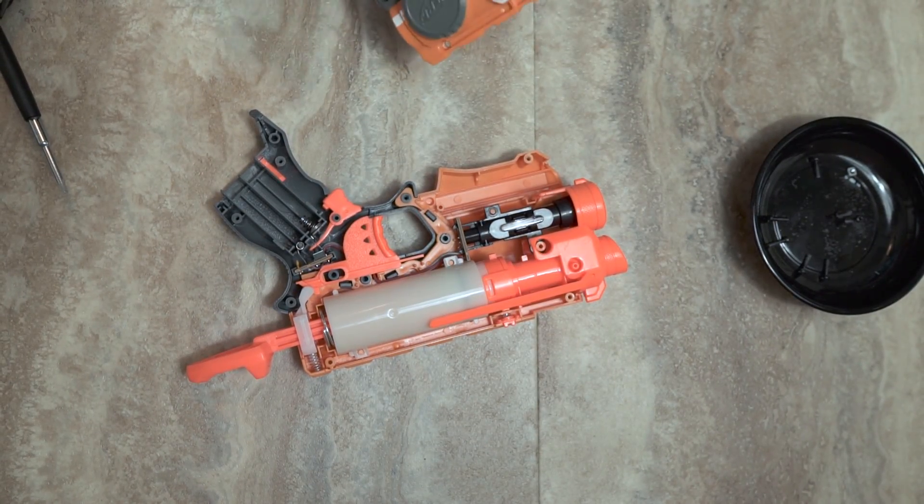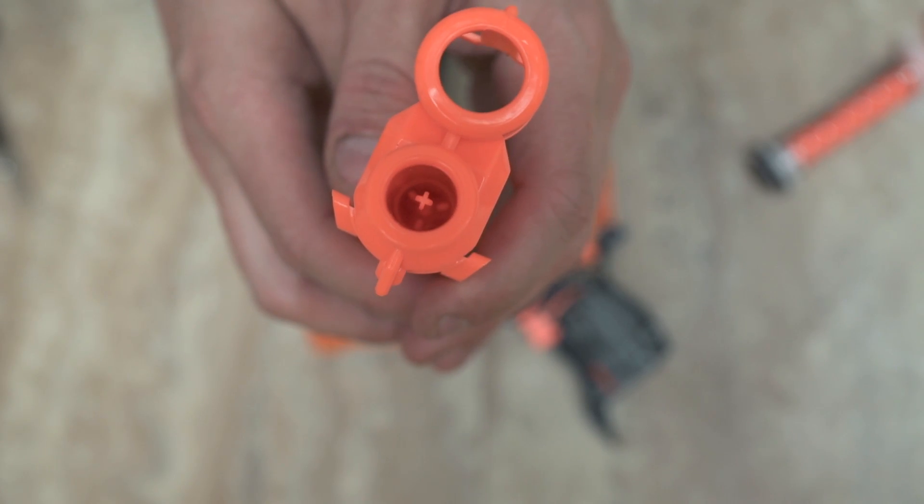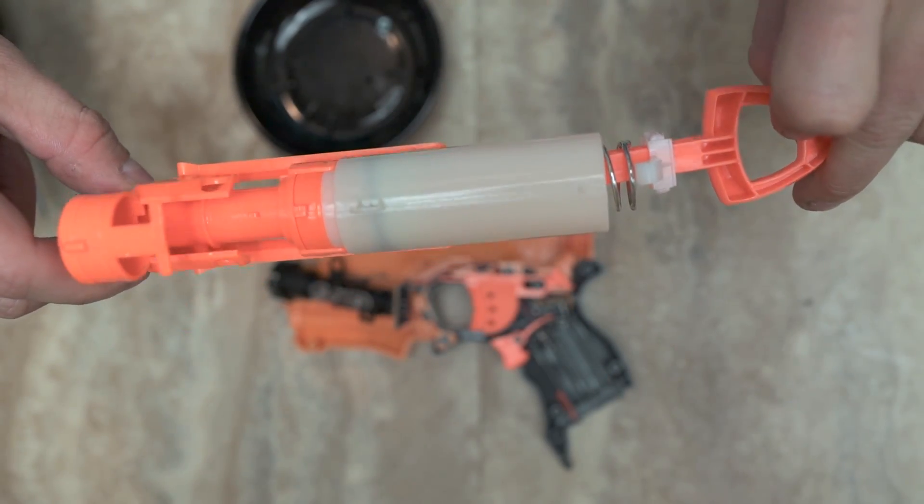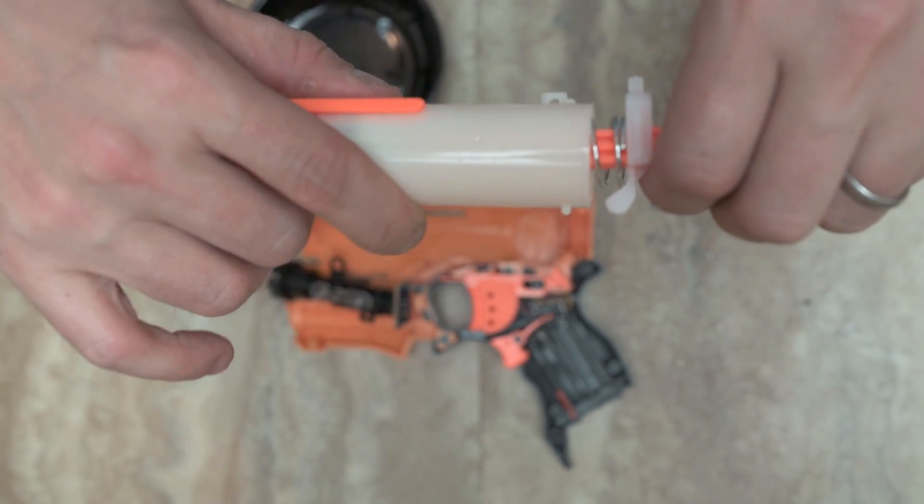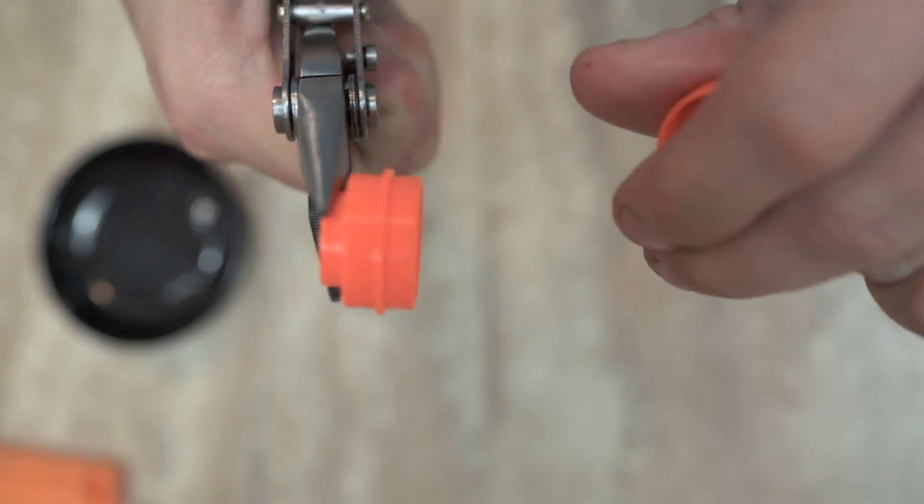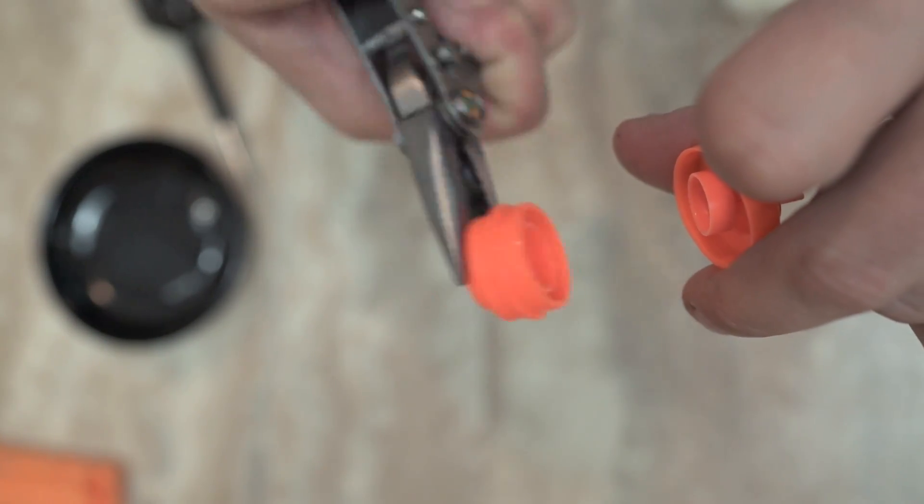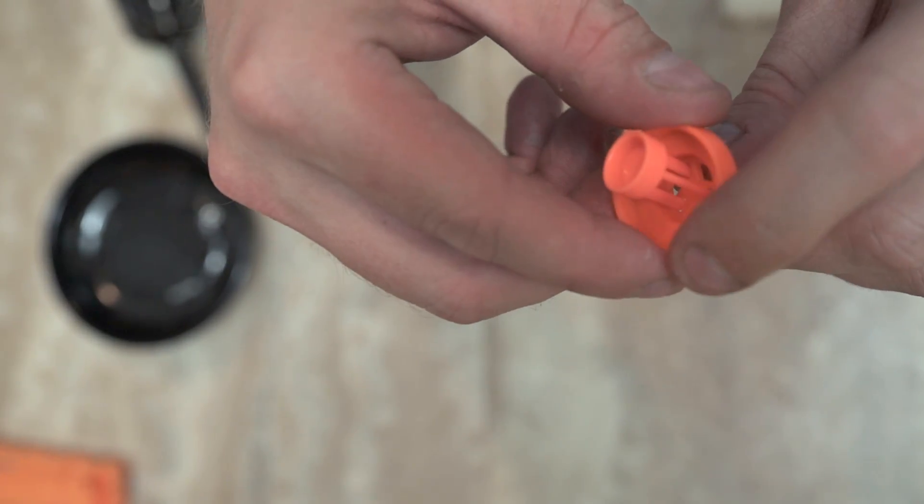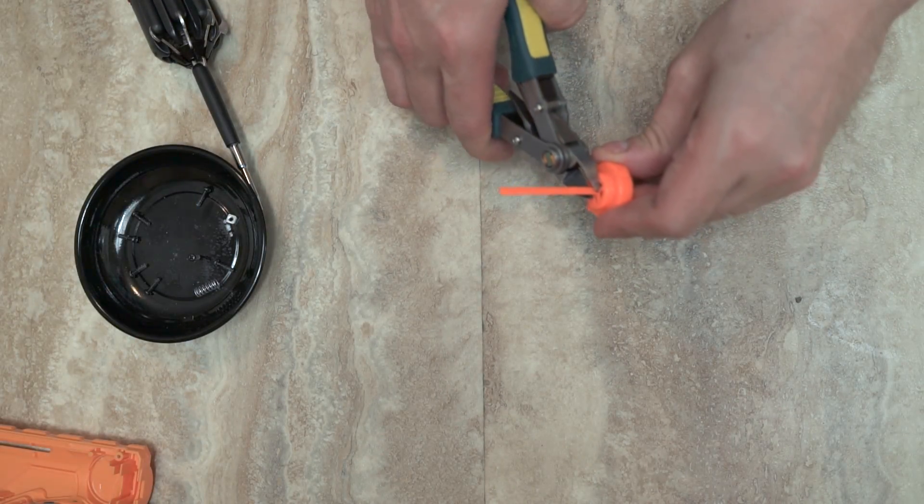While your gun might look a bit different than this on the inside, the only thing you need to focus on is removing the safety, which you'll always find at the base of the barrel. Just carefully remove the air piston and keep disconnecting the pieces until you reach that base. Remove the tiny plastic piece that blocks the hole. This lets us load anything we want.